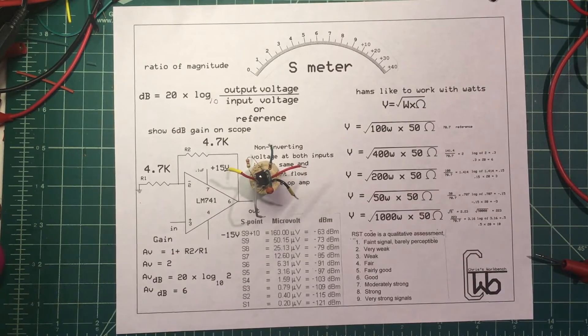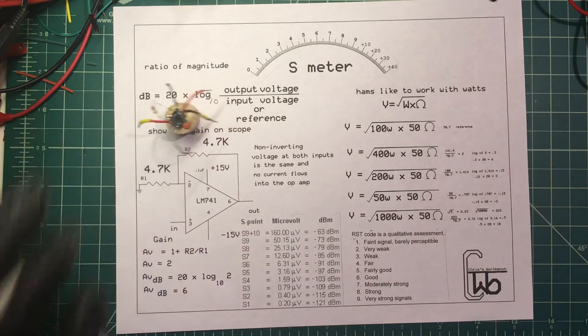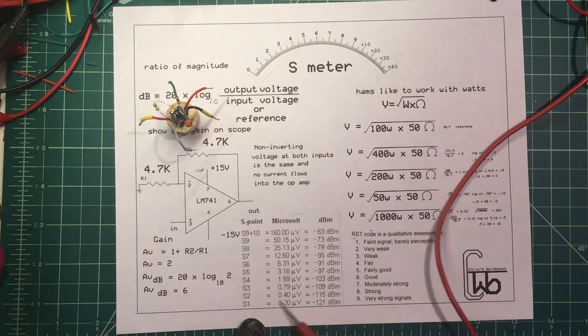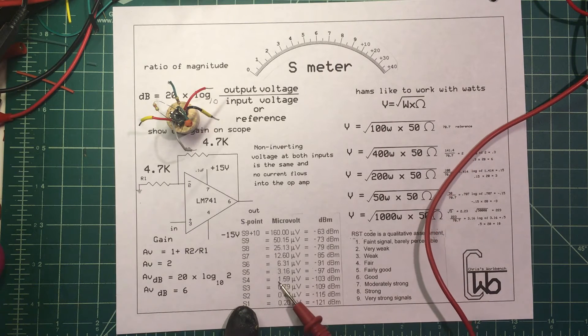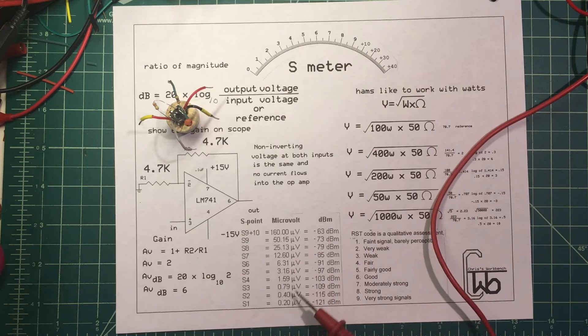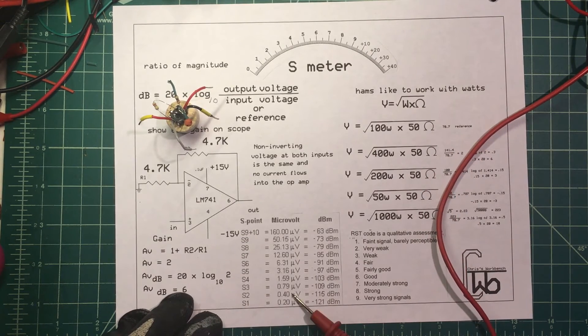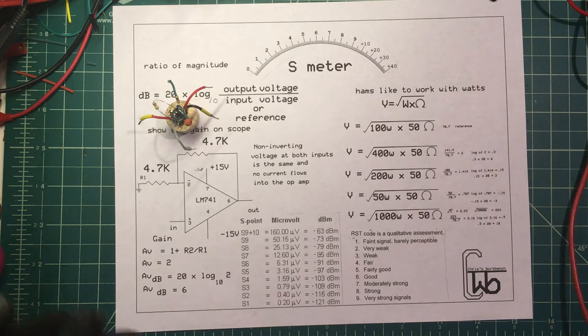On the S meter chart we see that an S1 is 0.2 microvolts, S2 is 0.4 microvolts, S3 is 0.8, 1.6... Every time we go up one unit, we double the voltage, we go up 6 dB.